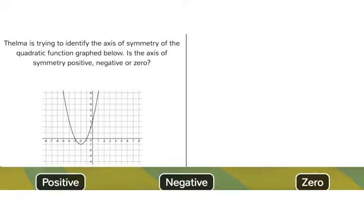In this question, we are trying to identify some characteristics of the axis of symmetry of the quadratic function graph below. They want to know, is the axis of symmetry positive, negative, or zero?